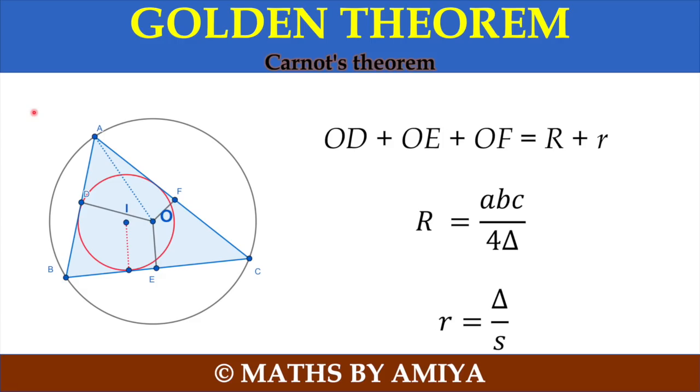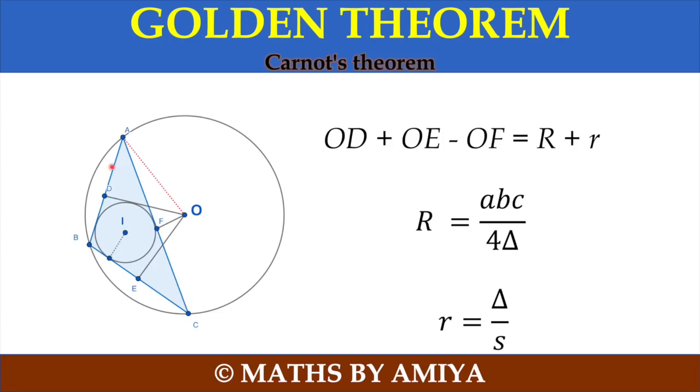But what happens if we have obtuse angle triangle? If we have obtuse angle triangle, then the circum radius should be outside from the longest side. And the OF is the perpendicular on the longest side, then the theorem converges to OD plus OE minus OF is equal to R plus r.